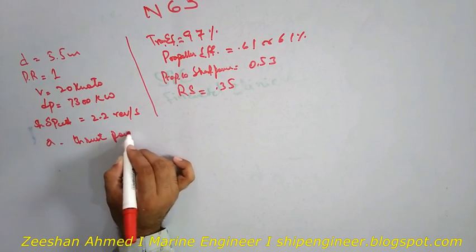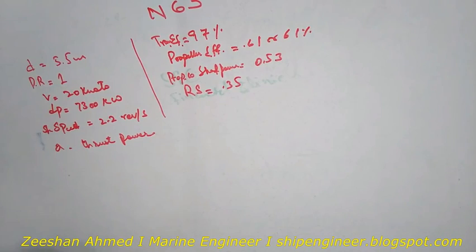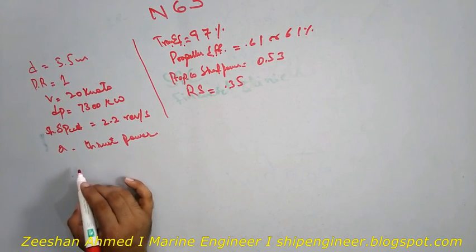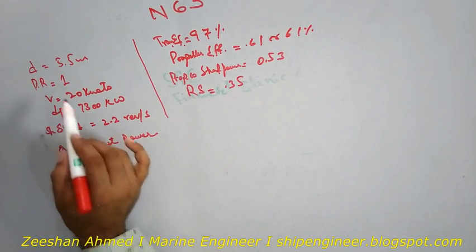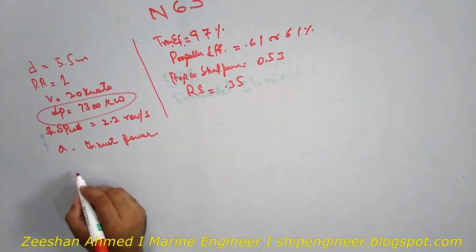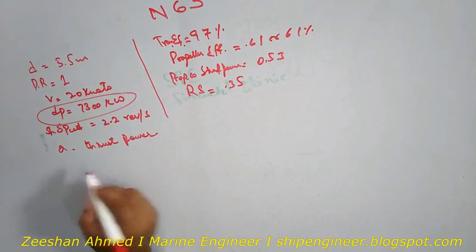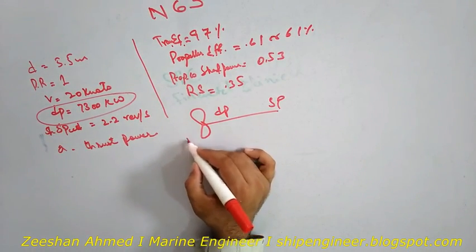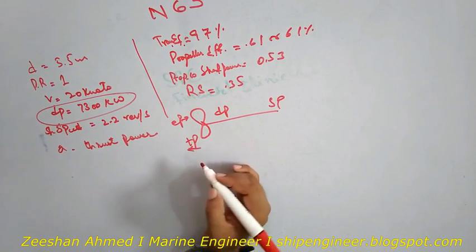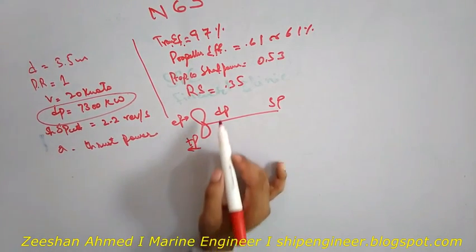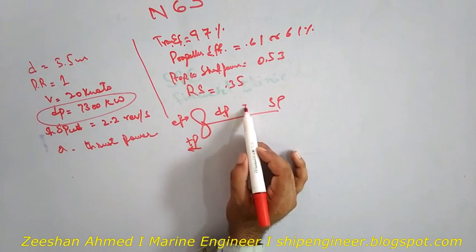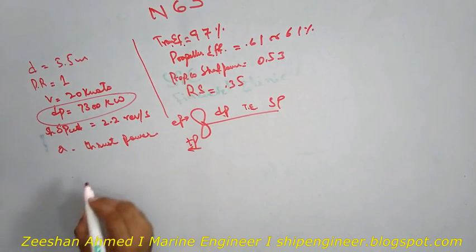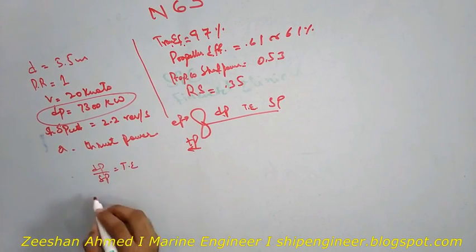For finding thrust power, we use the power chain formula. Since the delivered power is given, the relationship is: shaft power divided by delivered power equals transmission efficiency. So if we use transmission efficiency with the delivered power, we can get the shaft power.